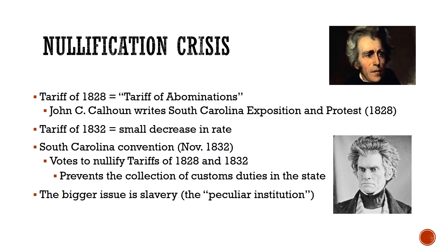Fast forward to 1832. Congress passes a new tariff, but it's really only a small decrease in the rate, so South Carolinians are really not happy. In November of 1832, the South Carolina legislature is going to allow a nullification convention to be held. The delegates to that convention are going to decide whether or not they want to formally nullify the tariffs of 1828 and 1832.